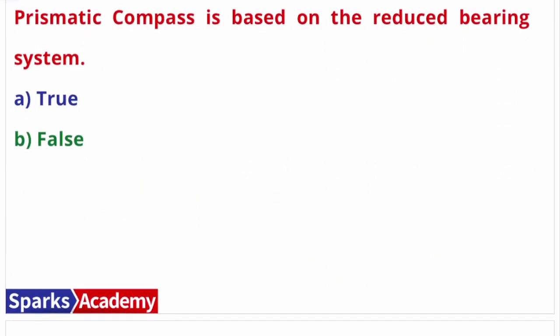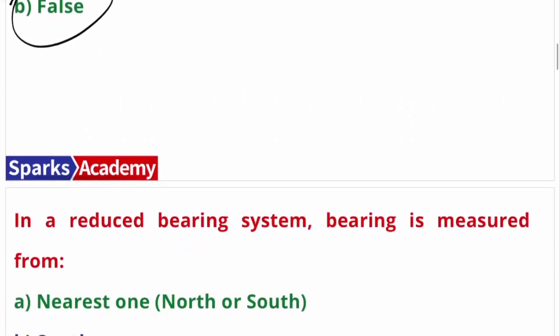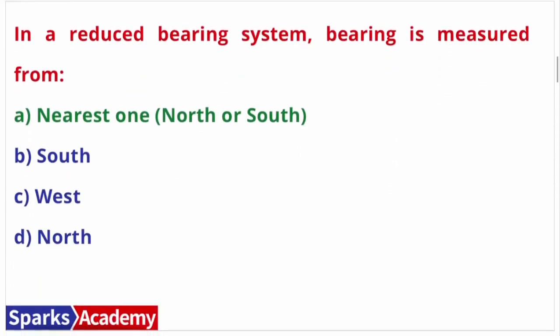Second question: the prismatic compass is based on the reduced bearing system — true or false? The answer is false. The prismatic compass is based on the whole circle bearing system, not the reduced bearing system. We will explain the difference between whole circle bearing and reduced bearing in the full video.